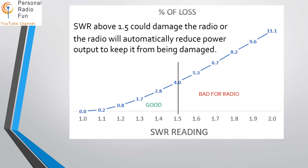A lot of modern radios, instead of damaging the finals, will automatically reduce the power output to protect themselves. So you could have a radio rated for 100 watts that's turned all the way up, but if SWR is too high it might drop output down to five watts or less — giving you very little power even at full dial setting. Hopefully that was understandable!